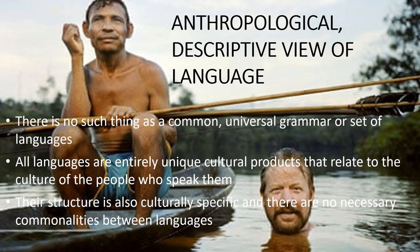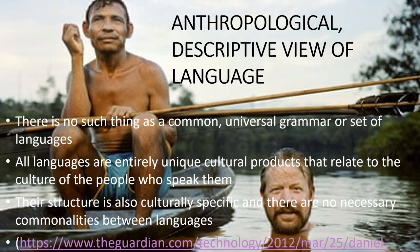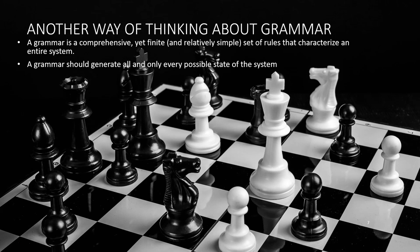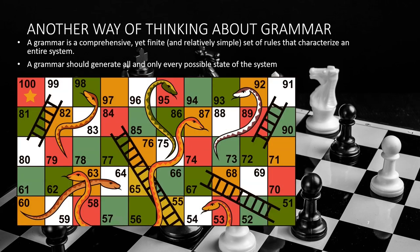Some linguists who criticized Dan Everett's work came from something known as the generative school, and they had another way of thinking about grammar. The generativists argue that a grammar is a comprehensive, yet finite, and hopefully relatively simple set of rules that characterize an entire system — a grammar should generate all and only every possible state of that system. To make this concrete, let's think about the game of snakes and ladders. A prescriptivist might say: make sure you throw a six, don't land on the head of a snake, and make sure you land on the bottom of a ladder. Unfortunately, those kinds of prescriptive rules might not be all that helpful.